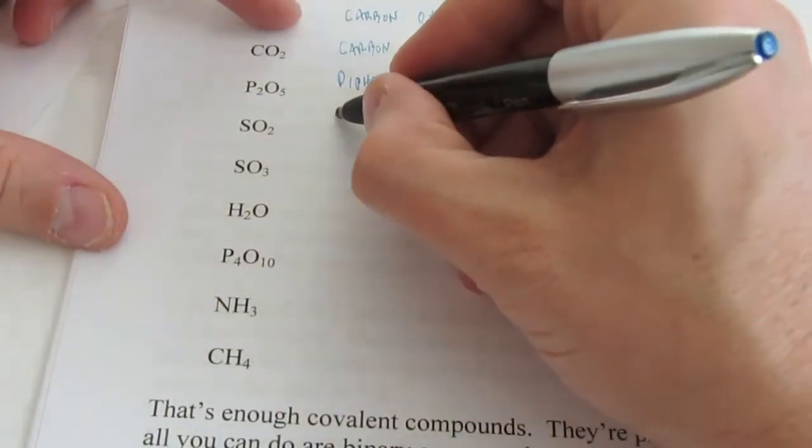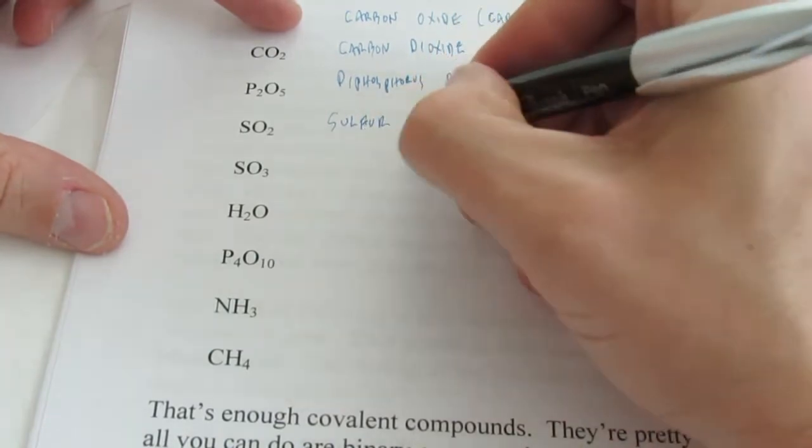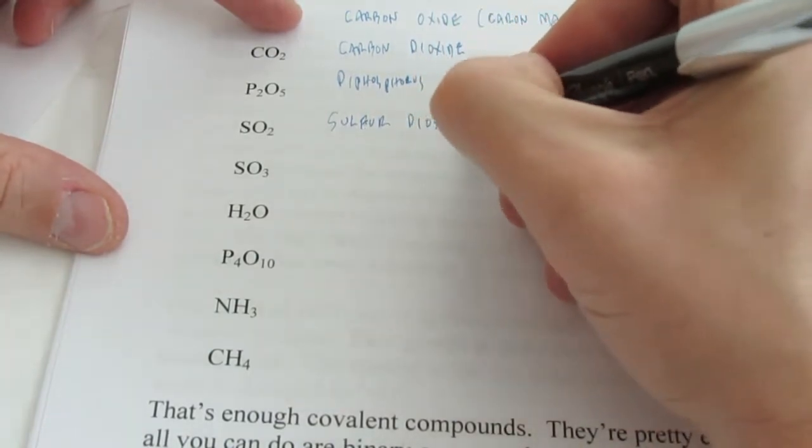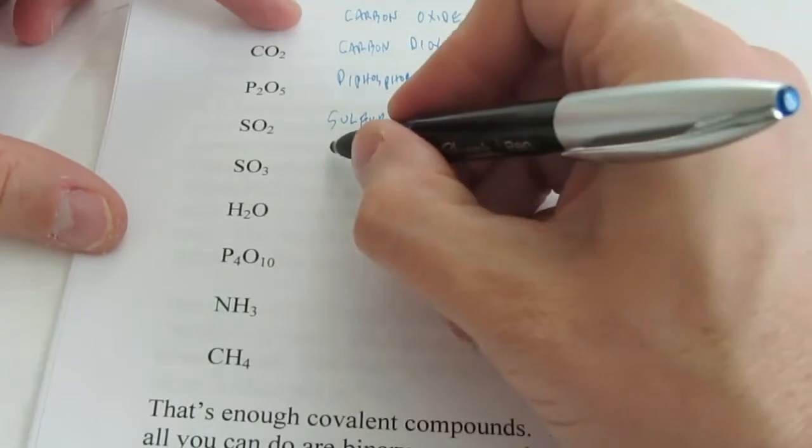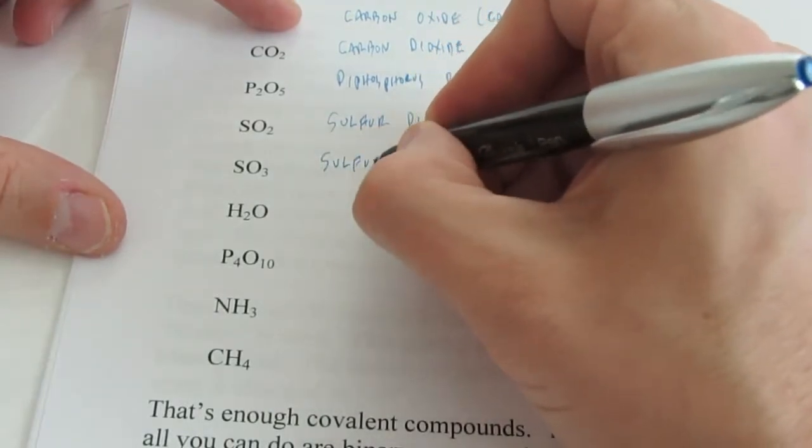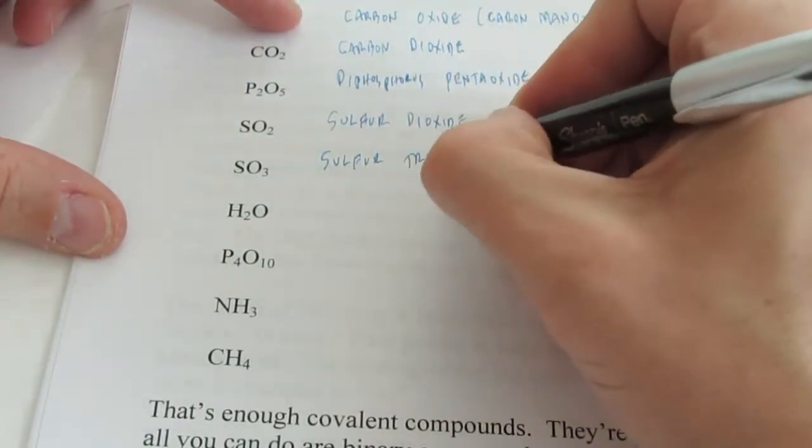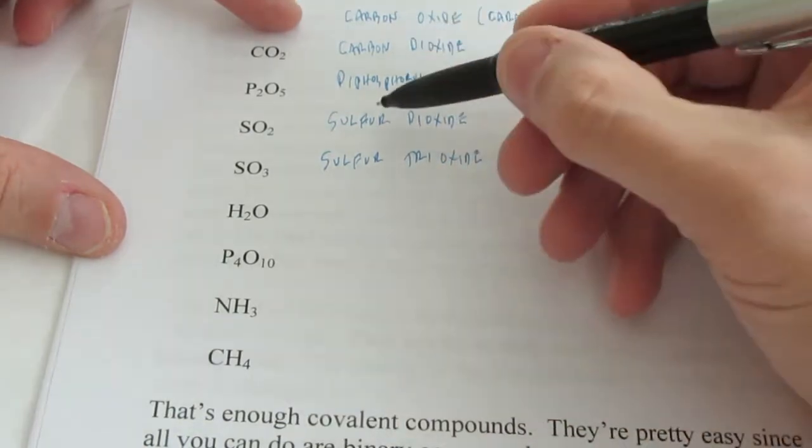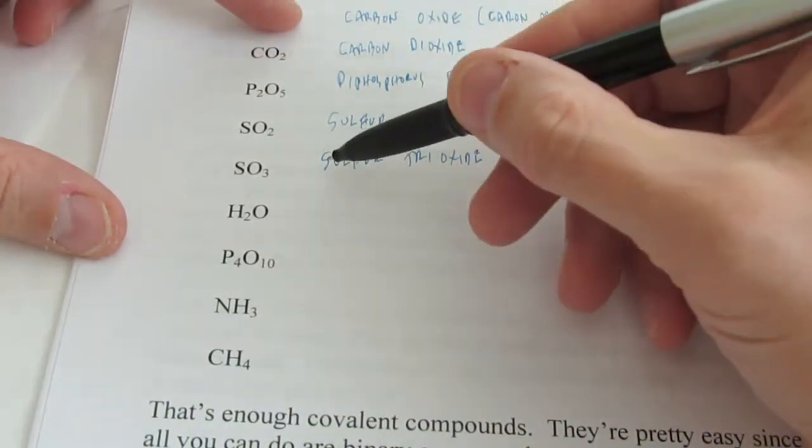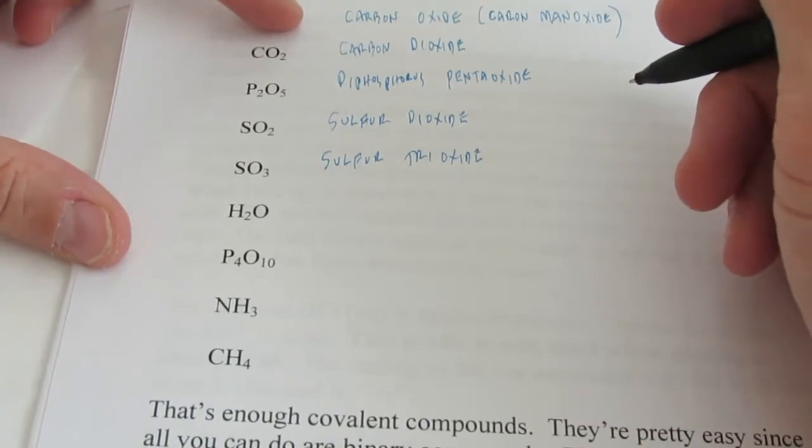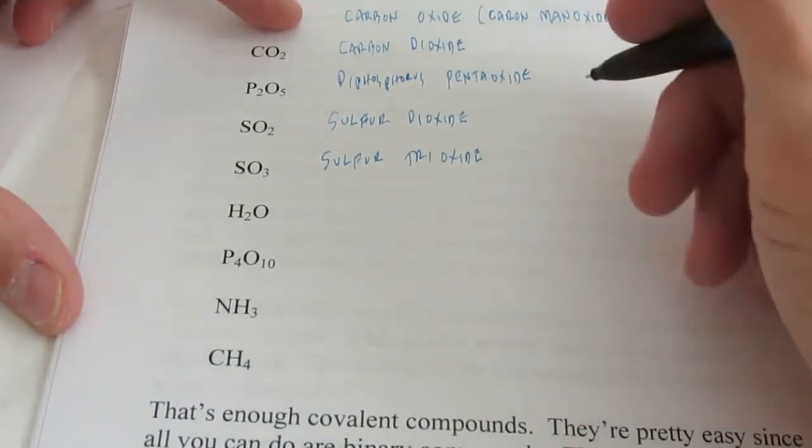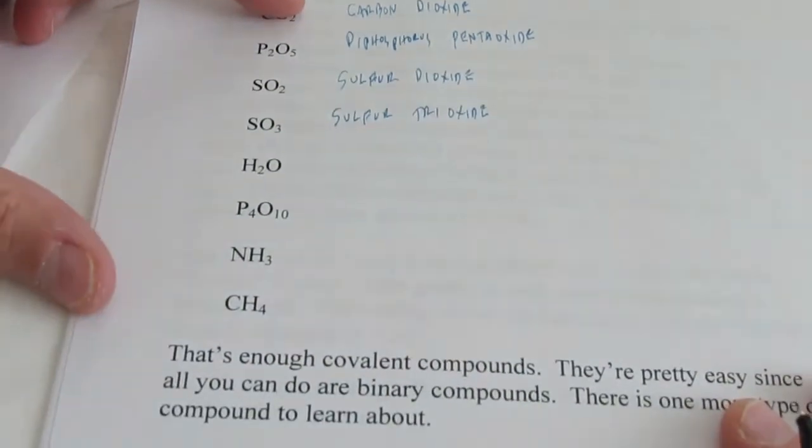SO2. Sulfur dioxide. SO3. Sulfur trioxide. Now if you want to call these monosulfur dioxide and monosulfur trioxide, you would be correct. But like I said, we like to drop the mono prefix as often as we can.